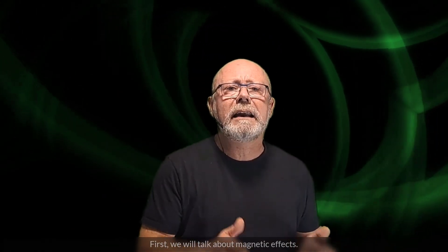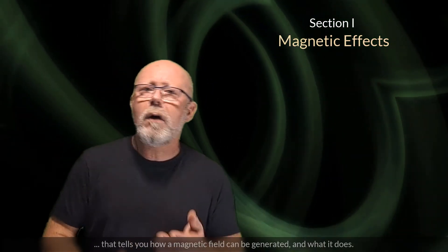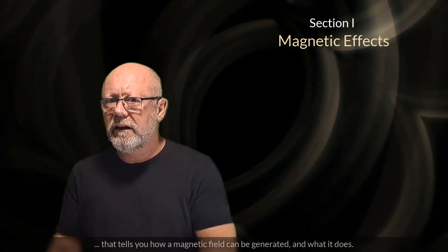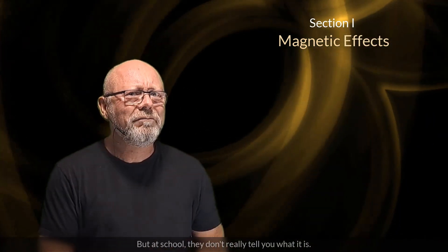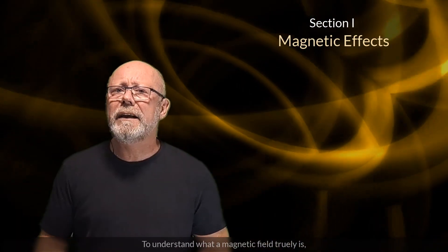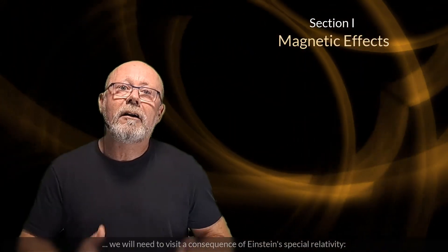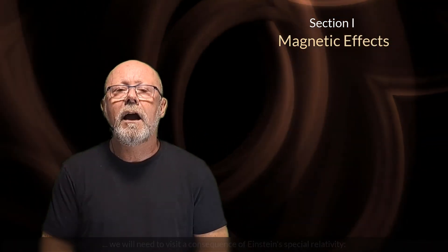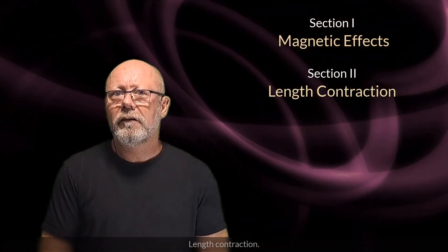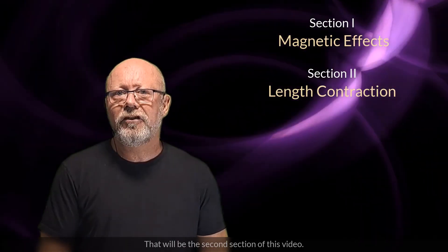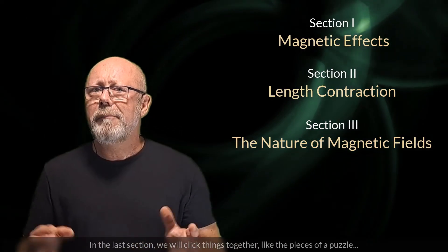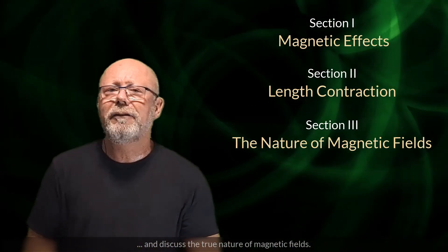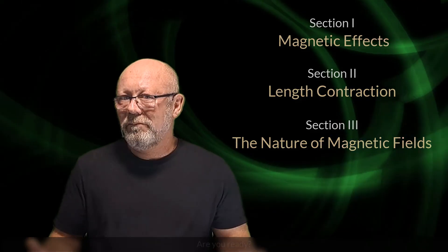First, we will talk about magnetic effects. Basically, the stuff you learn at school, that tells you how a magnetic field can be generated and what it does. But at school, they don't really tell you what it is. To understand what a magnetic field truly is, we will need to visit a consequence of Einstein's special relativity. Length contraction. That will be the second section of this video. In the last section, we will click things together like pieces of a puzzle, and discuss the true nature of magnetic fields. Are you ready? Let's begin.